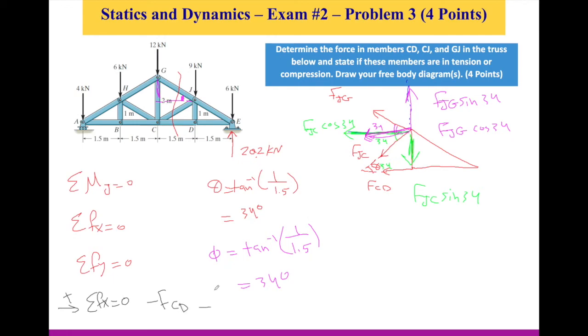I have minus FJC cosine 34. That's the one in the green. And I have minus FJG cosine 34. That's the magenta color. Do I have anything else? No. So those are all the only three. So this should equal to 0. That's your second equation of equilibrium. If you have this constructed, you will get another 0.5.